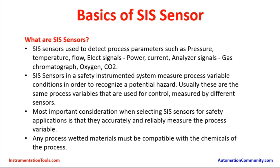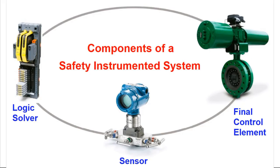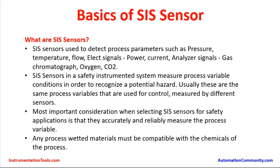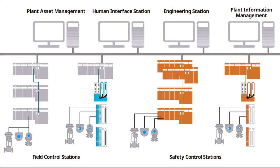SIS sensors in a Safety Instrumented System measure process variable conditions in order to recognize a potential hazard. Usually these are the same process variables used for control, but measured by different sensors. In the process piping or equipment, there are multiple sensors — one set for control applications, while the SIS sensors are in the same location but measured by a different set of sensors.